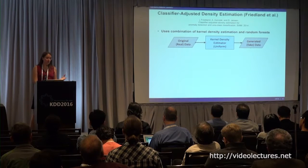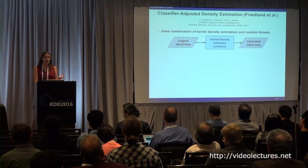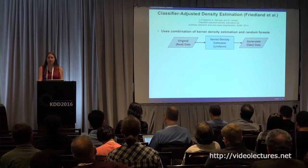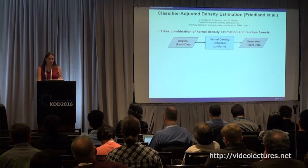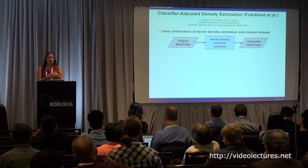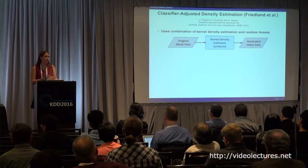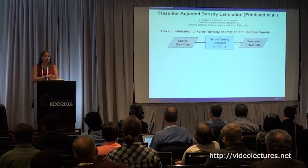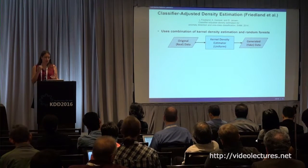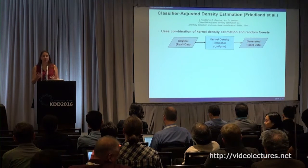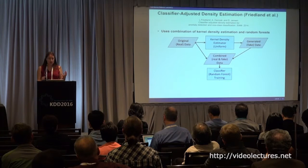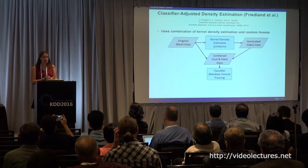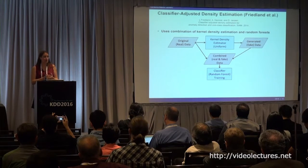There is something called classifier adjusted density estimation, introduced by Friedland, Gensel, and Jensen fairly recently, which is basically a way of doing kernel density estimation — and it's a pretty slick way that gives us the interpretability we want. Basically, you start with your original dataset, learn a kernel density estimate — specifically a uniform kernel density estimate — and from that estimator you generate a fake dataset of the same size as the real dataset. You then combine those two datasets and feed them into a random forest, which gives us probabilities rather than just the class.